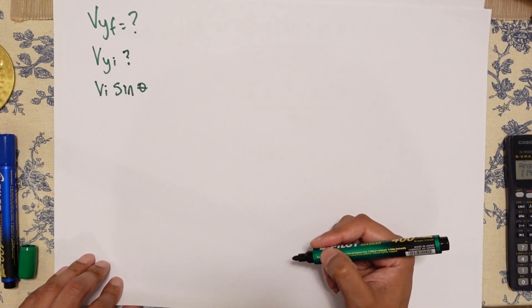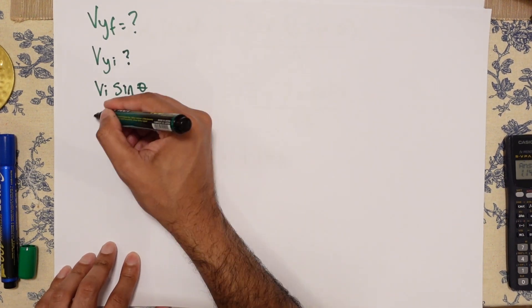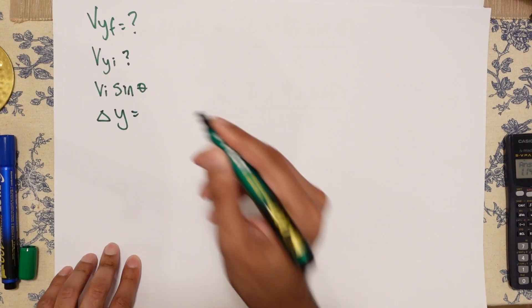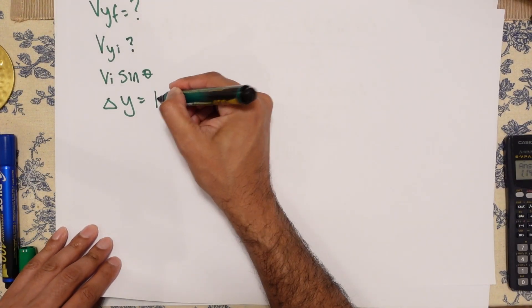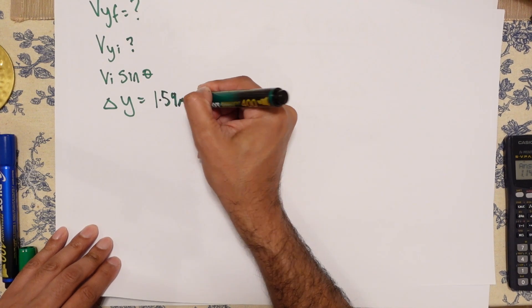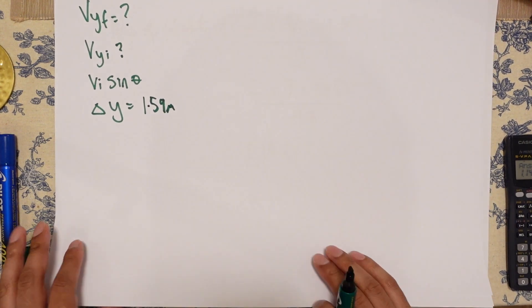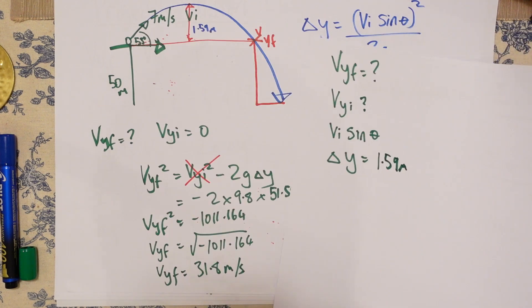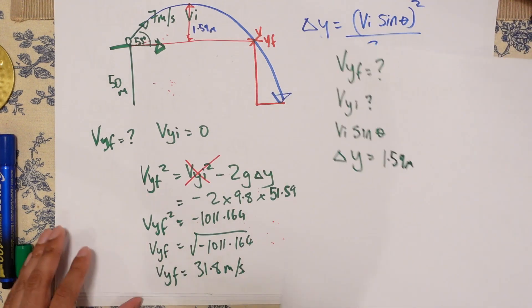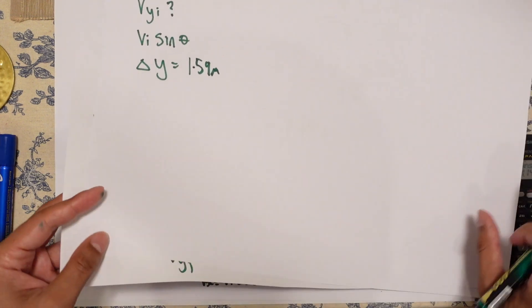We know that delta Y, 1.59 meters. So let's work out this VYF. So we want something with this and we have G as well. So let's get our equation out.